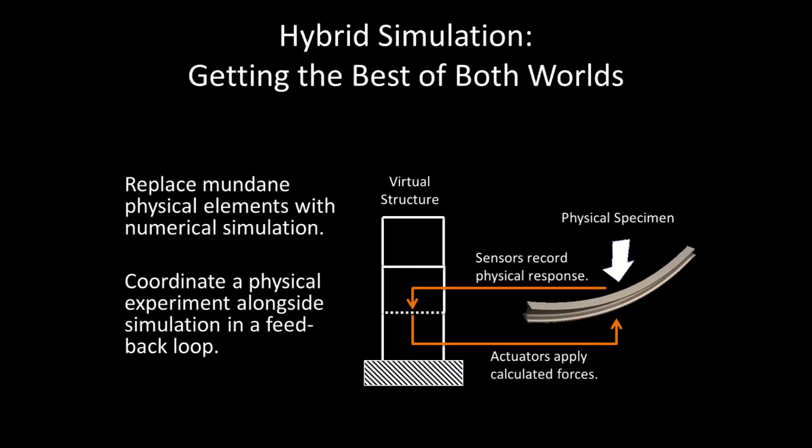Taken together, the composite cyber-physical structure can faithfully represent the building as a whole, even though some parts only exist as a computer simulation. This lets us test our new design for a fraction of the cost of building the entire structure.